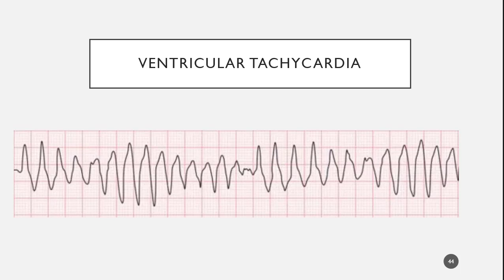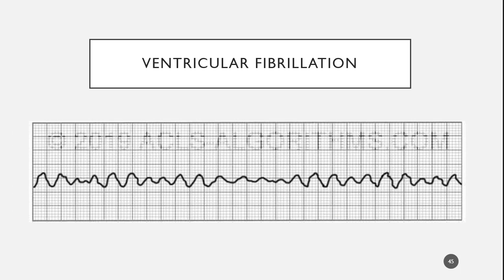Polymorphic means it's coming from multiple places in the heart. This is always concerning — regardless of what your patient looks like, we're always going to be concerned about this. It's coming from multiple points in the heart. What is the other rhythm that is a non-perfusing rhythm coming from multiple points in the ventricles? V-fib. So if we don't take care of this, it's going to deteriorate into ventricular fibrillation.